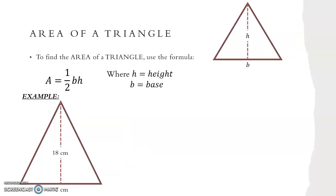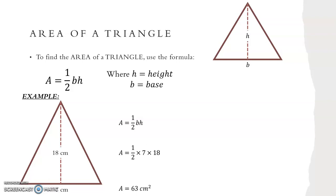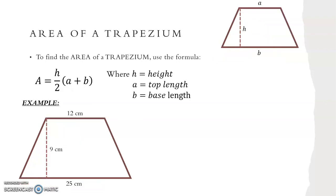For the area of a triangle we use the formula A equals a half BH, where H equals the height and B equals the base. For our example we write out our formula A equals a half BH, then we substitute in our base length of 7 and our height of 18 to get A equals a half times 7 times 18. We put this into our calculator to get an area of 63 centimetres squared.